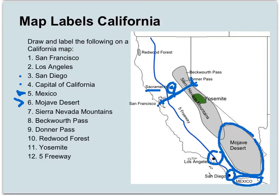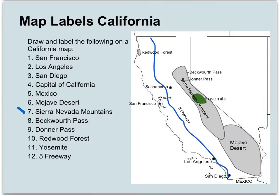These are approximate locations for these different places — I don't expect you to have it exactly the same as what you see on the map, but you should be able to come pretty close showing where the Mojave Desert is. And remember, that's Mojave, not "Mo-have." The Sierra Nevada mountains run a good portion of the state, kind of dividing California from Nevada.